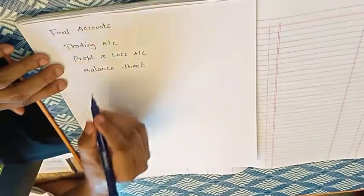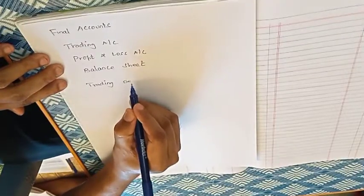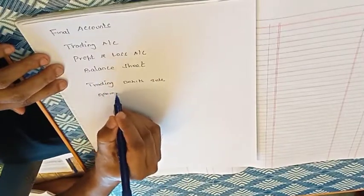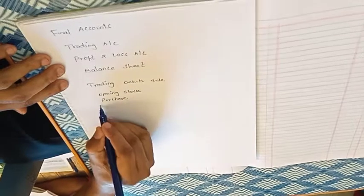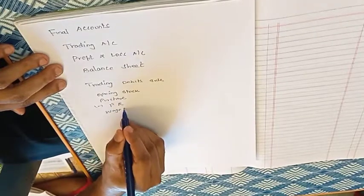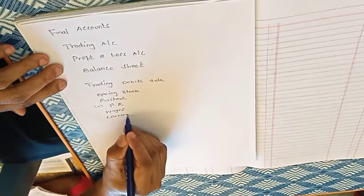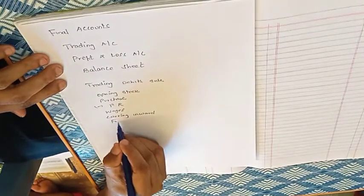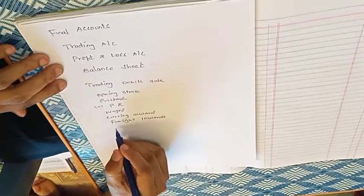In the trading account, money is available. On the debit side we have: Purchase minus Purchase Return, Wages, Carriage, and Freight. These are the debit items of the trading account.